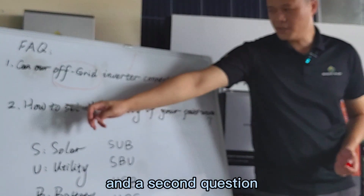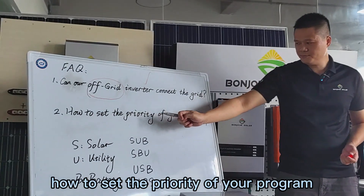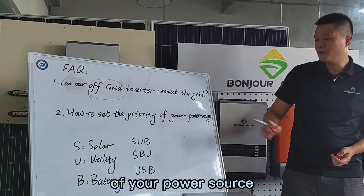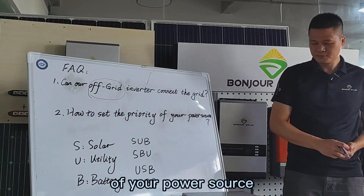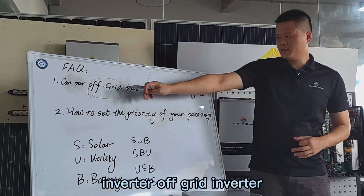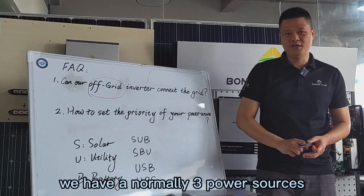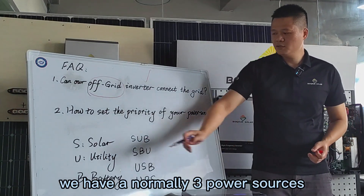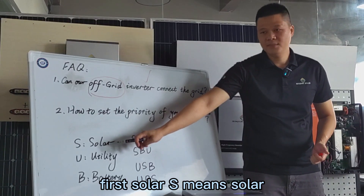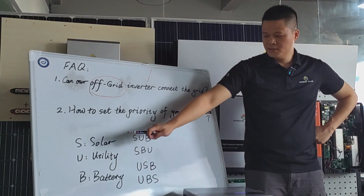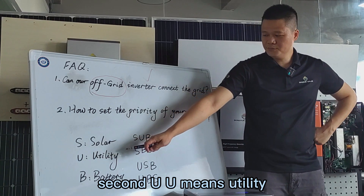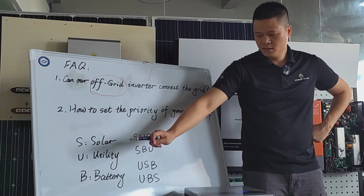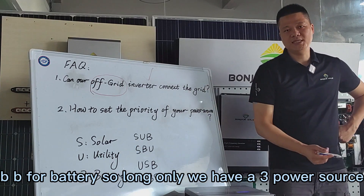The second question: how to set the priority of your power source. For our off-grid inverter, we have three power sources. First, S — solar. Second, U — utility, meaning the grid. Third, B — battery.